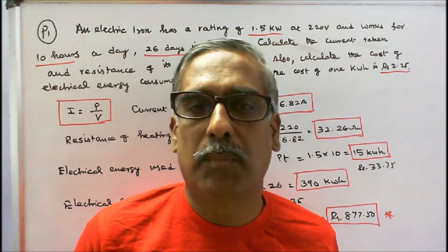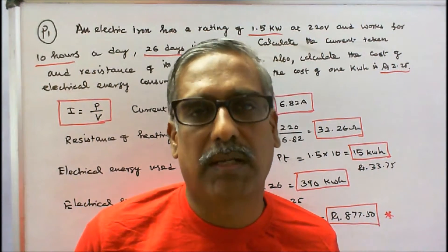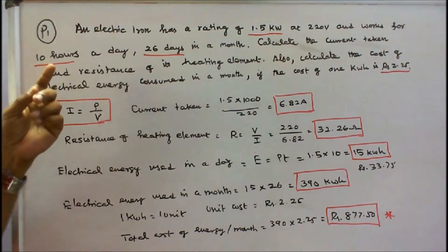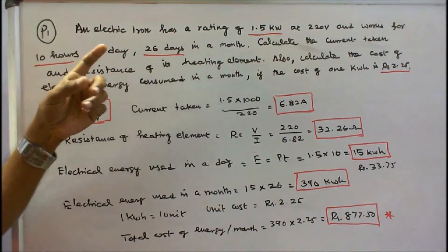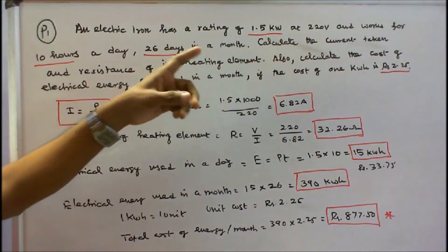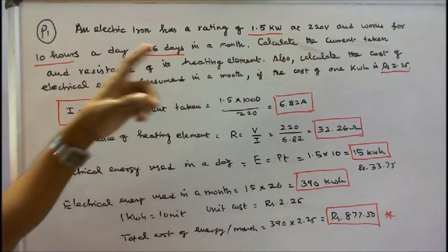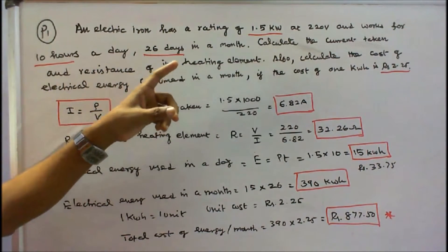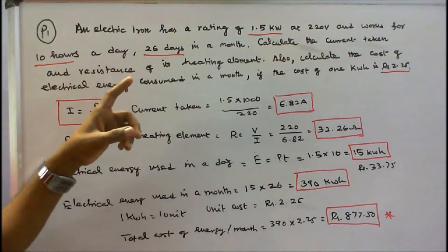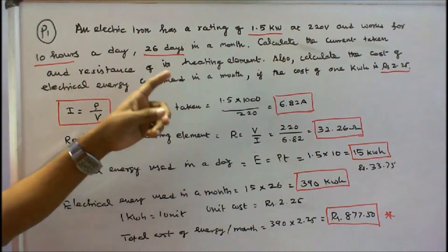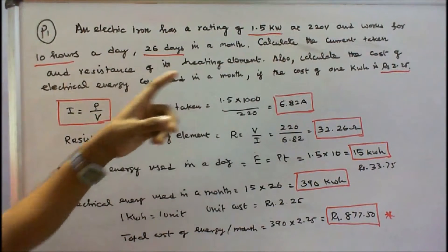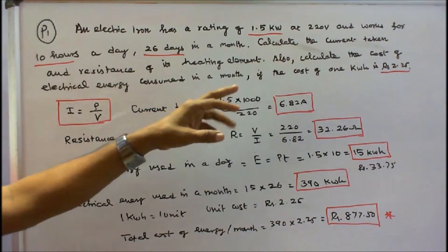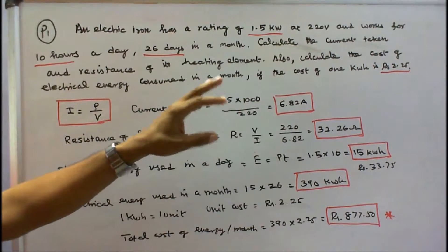In this class we work out 5 problems on cost of electrical energy. Problem 1: An electric iron has a rating of 1.5 kW at 220V, and works for 10 hours a day, 26 days in a month. Calculate the current taken and resistance of its heating element. Also calculate the cost of electrical energy consumed in a month if the cost of 1 kWh is Rs. 2.25.